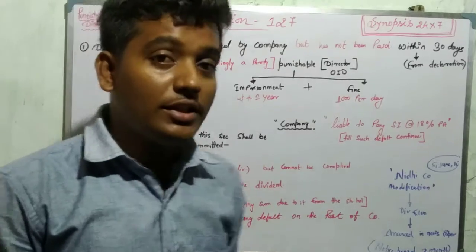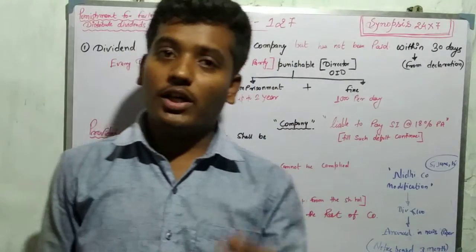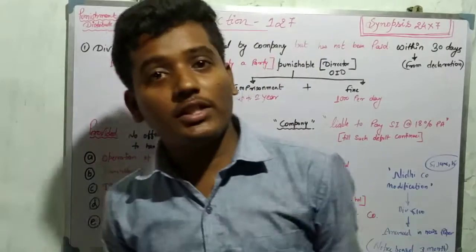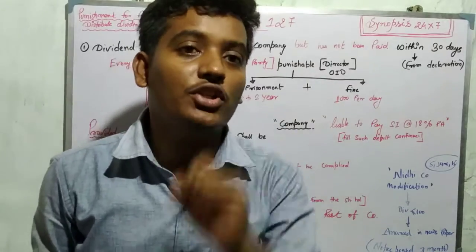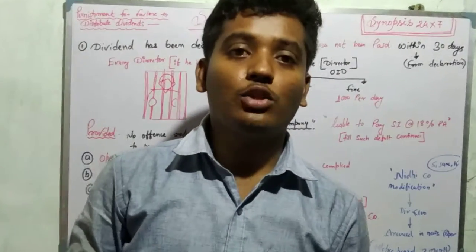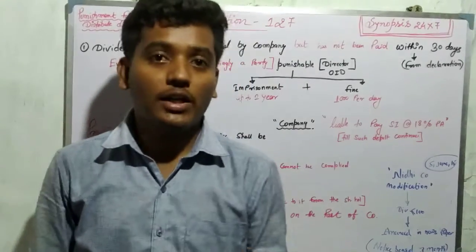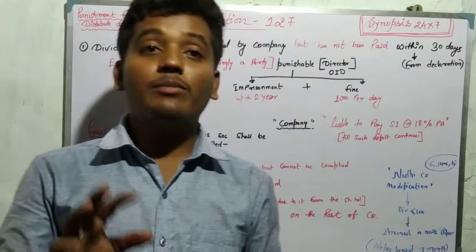A company under Section 123 can declare dividends. If payment is not possible, then under Section 124 it can be transferred to the unpaid dividend account. If payment is still not possible, then the amount remains unpaid.